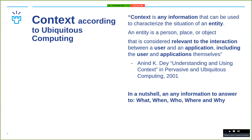For us, in the computer field, context is basically any information that can be used to describe or characterize the situation of an entity. By entity, it can be a person, a place, or an object. This is more related to the interaction that the user has with a system.